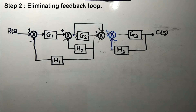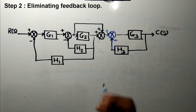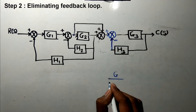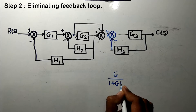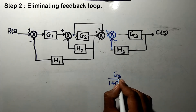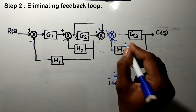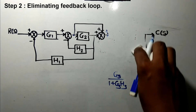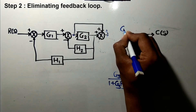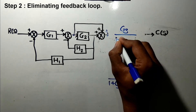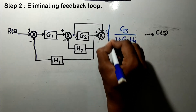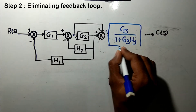Now you can see that G3 and H3 are connected in a feedback loop. Our step number two is eliminating this feedback loop. The formula is G divided by 1 plus GH since there is negative feedback. Here G is G3 and H is H3, so this block is reduced to a single block with transfer function G3 over (1 + G3·H3).